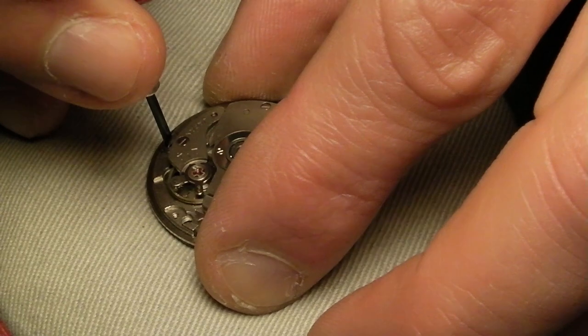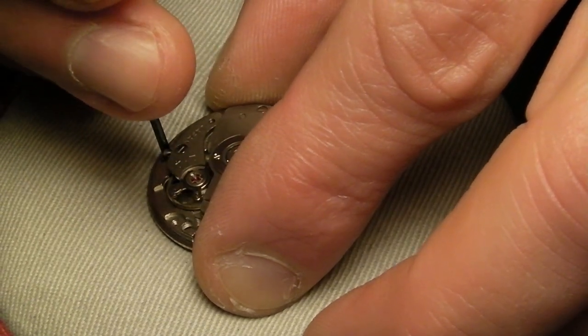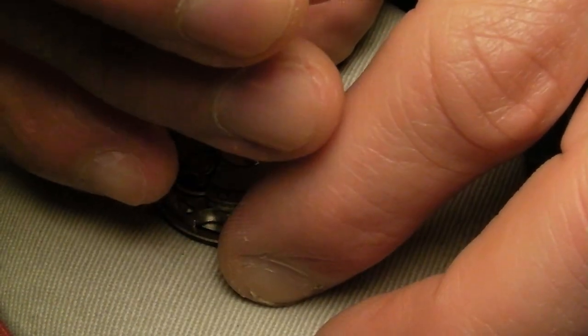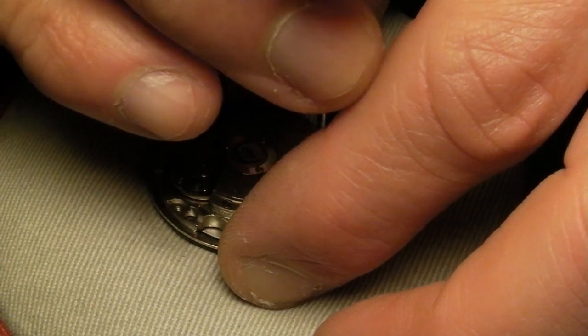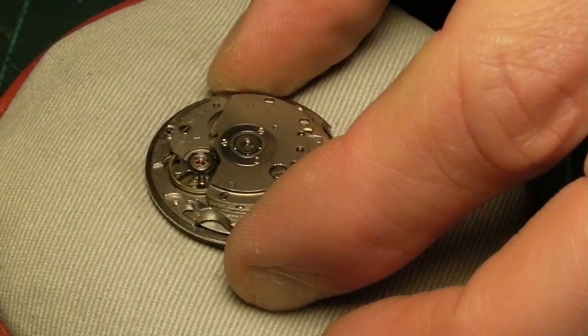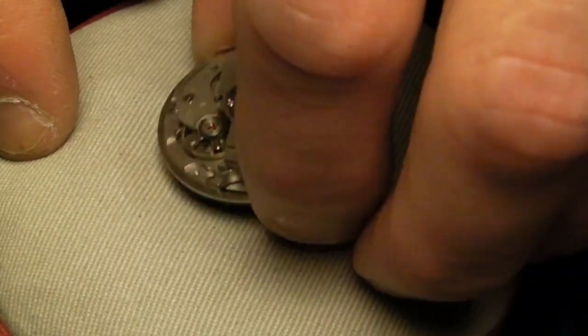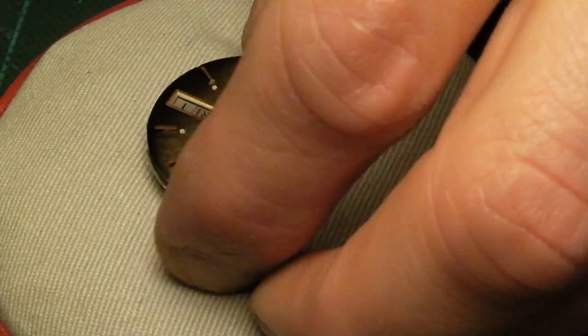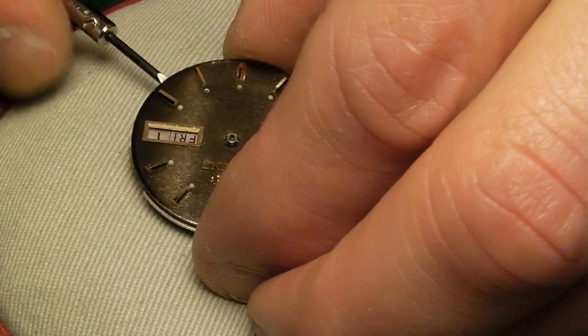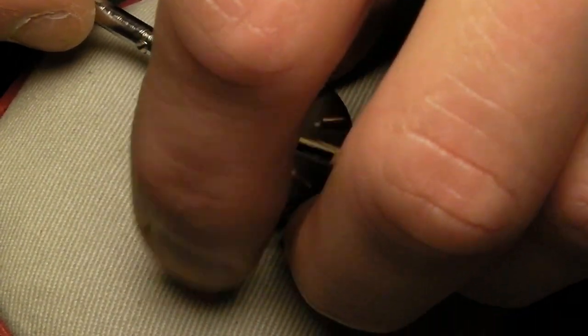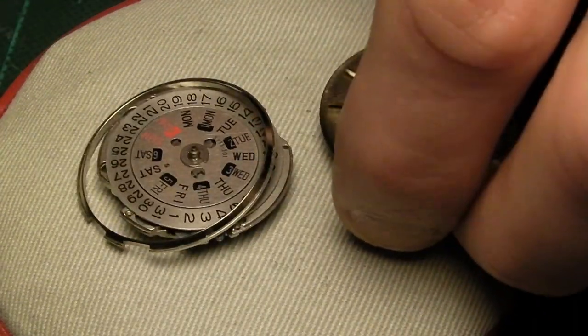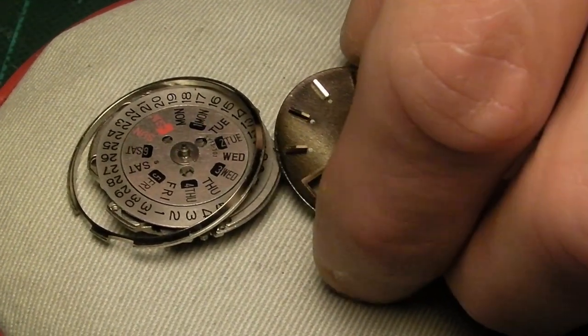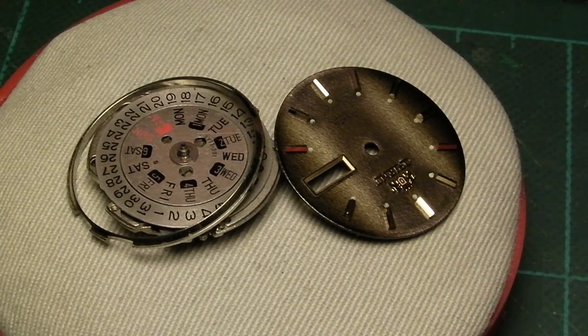Next step is to undo the dial feet screws which are eccentric screws located on the back. They just need a half turn to stop them gripping the dial feet, and then the dial with a little bit of gentle levering with the screwdriver just lifts off. The dial is then put into a protective case.